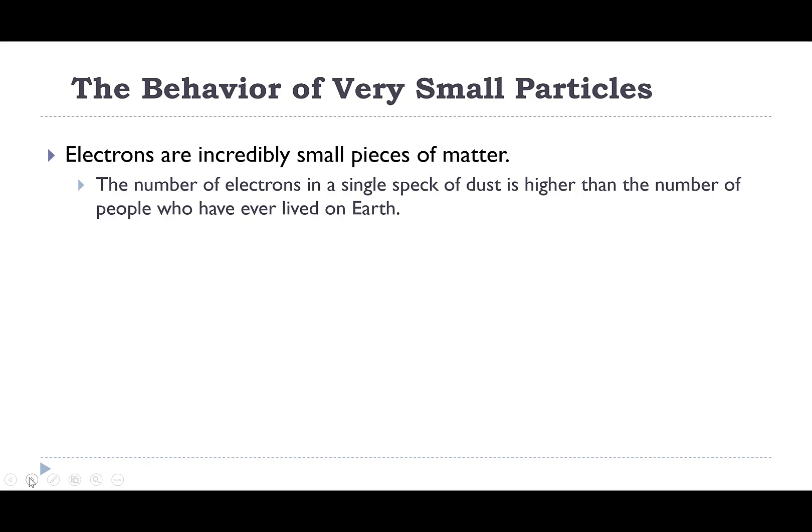Electrons are incredibly tiny pieces of matter. The number of electrons in a single speck of dust is higher than the number of people that have ever lived on the earth. Because they live in this world that we know nothing about, we're finding out that they act in very peculiar, in different ways. They act in ways that matter that we can observe don't act. They follow different rules. Much of the behavior of an atom is determined by these electrons. Even though electrons behavior is different, all of the observations that we make about atoms are dictated by the electron. We're going to spend an entire chapter learning about the electron, and then the rest of general chemistry this semester and next, we'll be learning how those electrons dictate the properties we observe.